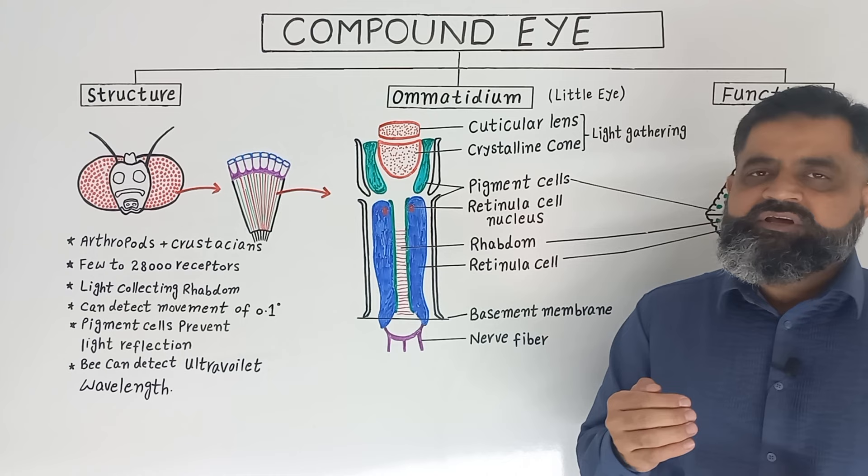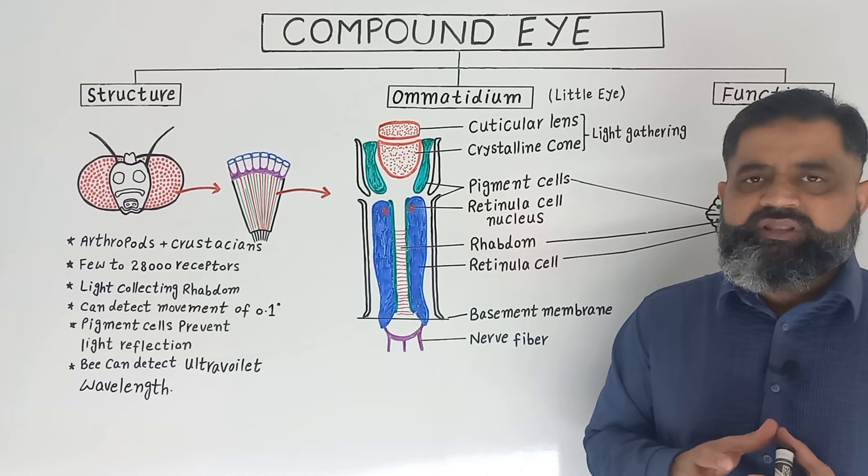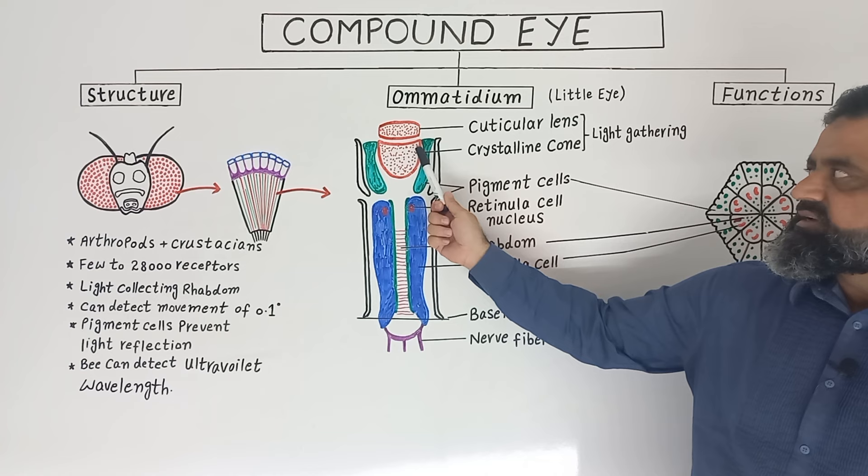The electrical impulse is then transported to a nerve fiber, which takes this nerve impulse towards the optic nerve. The optic nerve leads this nerve impulse to the central nervous system, where the decision is made about the movement or the object which the ommatidium is detecting.